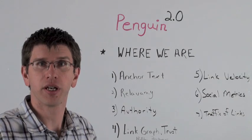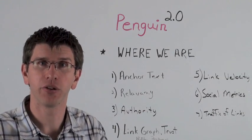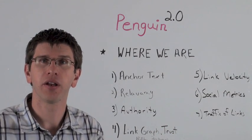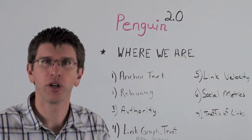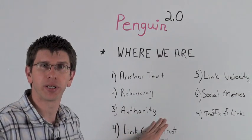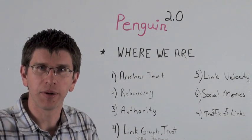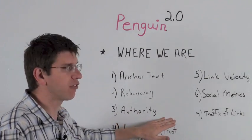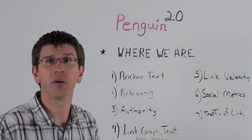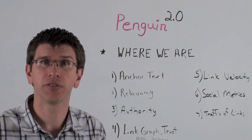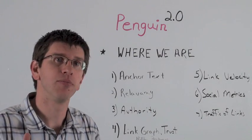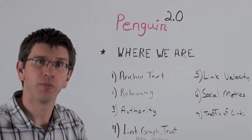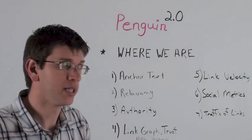Another thing we've seen through Open Site Explorer is page authority and domain authority — looking at the authority of the link. There's a lot out there that talks about authority: Is it high page rank? Is it an aged domain? A site that actively has a lot of authority — those links should be worth more. A lot of people have tried to buy authority by purchasing links, so be careful. Getting links from authority sites is important, and it's not about the amount of links anymore. Going into the top ten in Google, it doesn't matter near as much about total link count as it does about the authority and relevancy of those links.